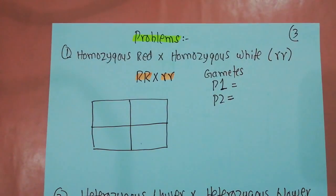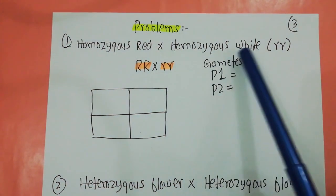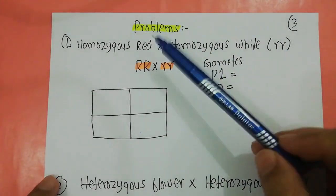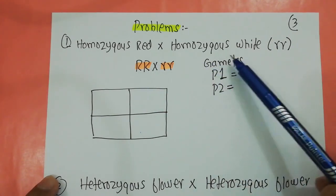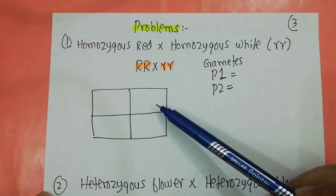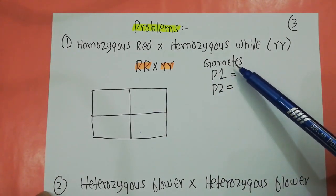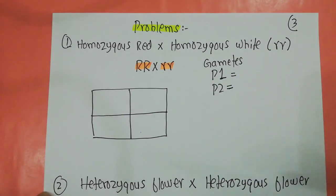Now let us solve some problems involving incomplete dominance. For example, if you are given the problem: cross a homozygous red flower with a homozygous white flower. The first thing you have to do is find out the genotypes. The homozygous red can only be capital R capital R. The homozygous white can only be small r small r. When solving the Punnett square, you first make the gametes of the parents.